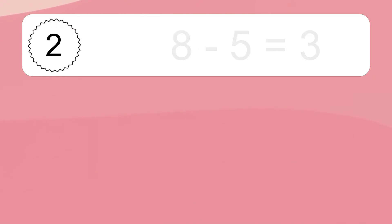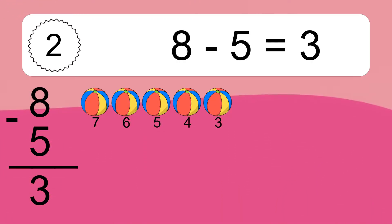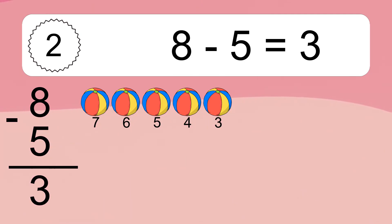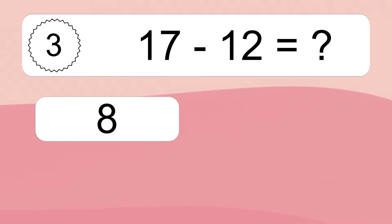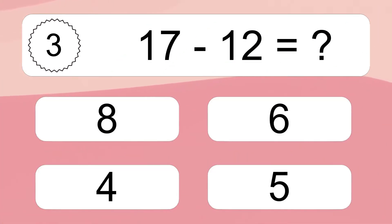8 minus 5 equals 3. Let's count it: 7, 6, 5, 4, 3. 17 minus 12 equals what?